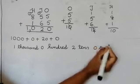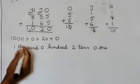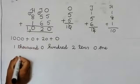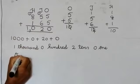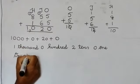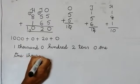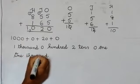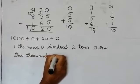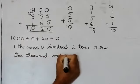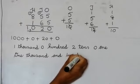Now we write the place value: 1 thousand, 0 hundreds, 2 tens, 0 ones. Next step, we will write down in words: one thousand and twenty.